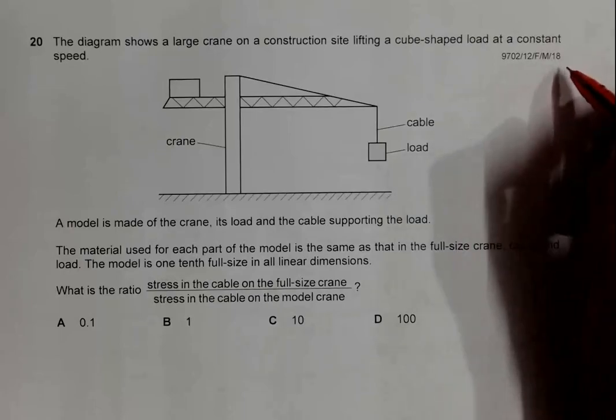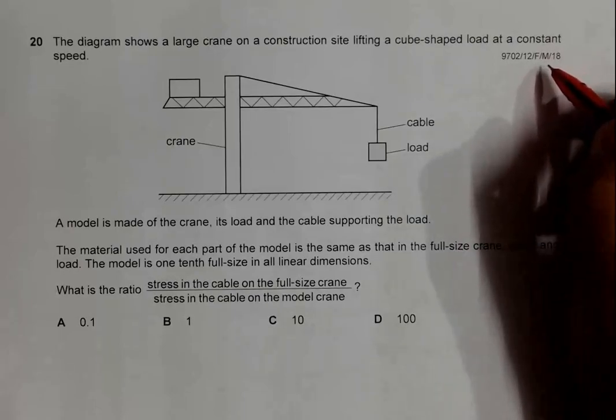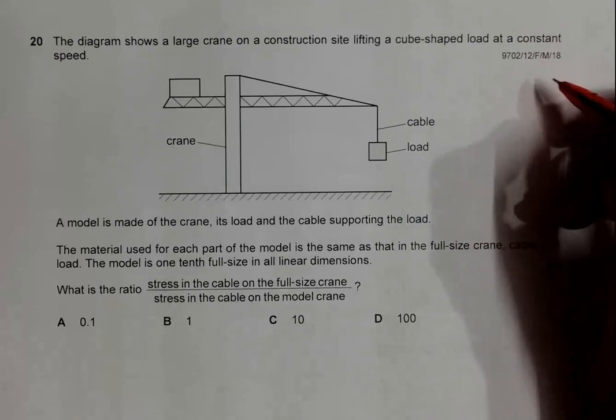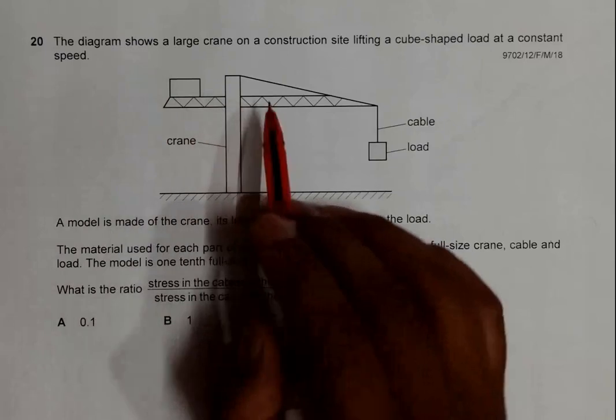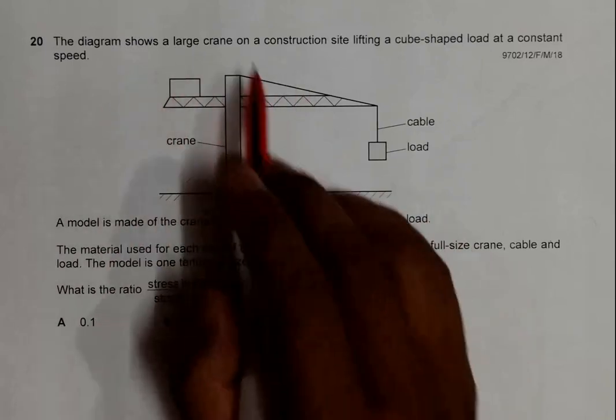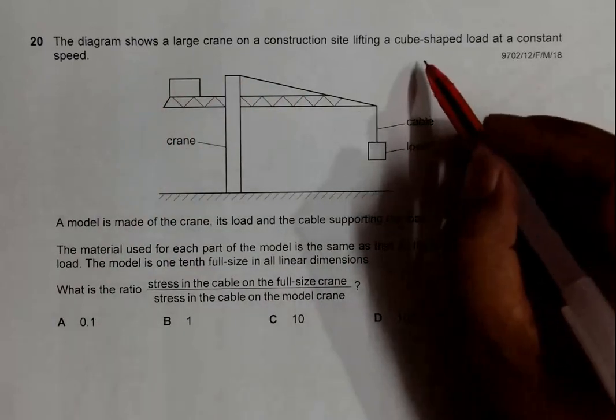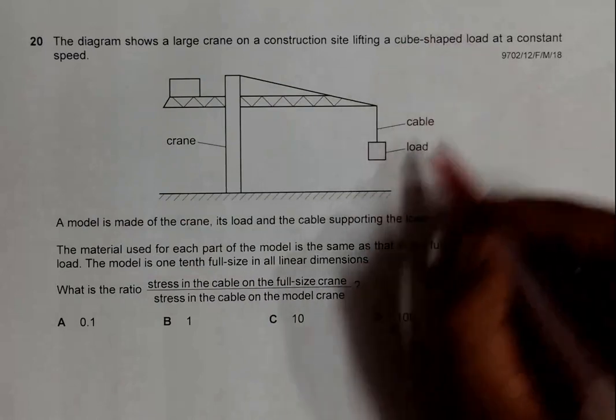This is question 20 from the 2018 February-March Paper 1-2. The diagram shows a large crane on a construction site lifting a cube-shaped load at a constant speed.